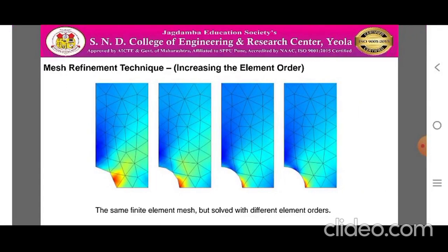Increasing the element order is one of the mesh refinement techniques. It is advantageous in the sense that no remeshing is needed — the same mesh can be used but with different element orders. Remeshing can be time-consuming for complex 3D geometries, or the mesh may come from an external source and cannot be altered.